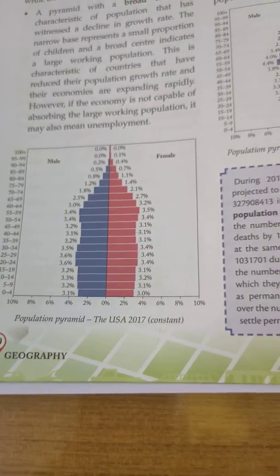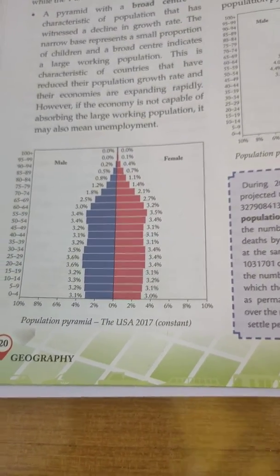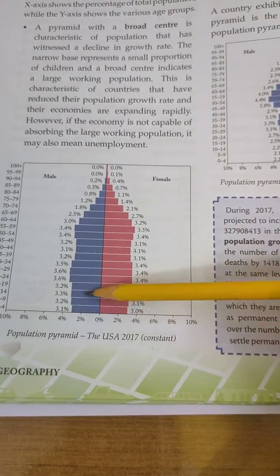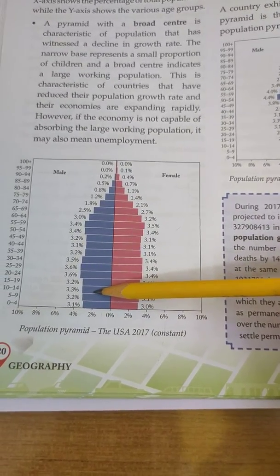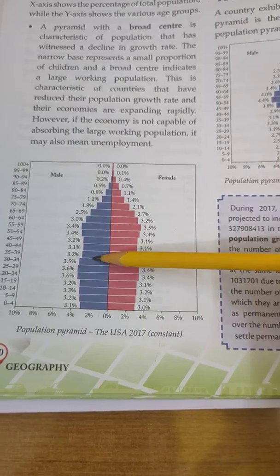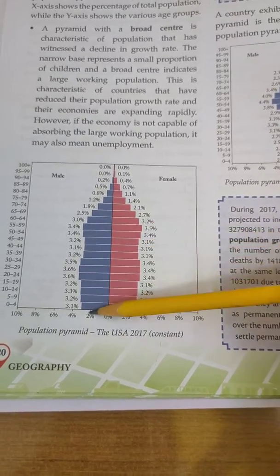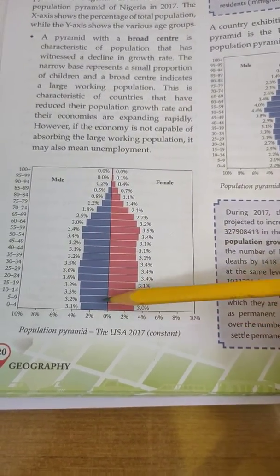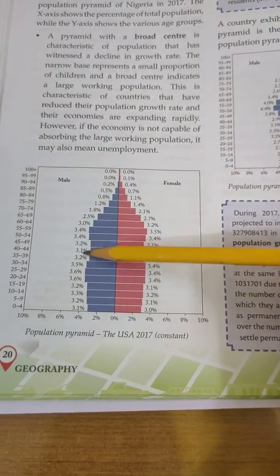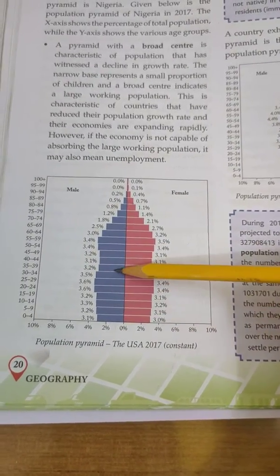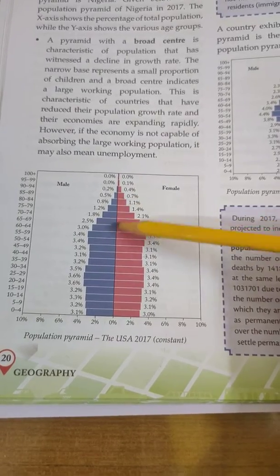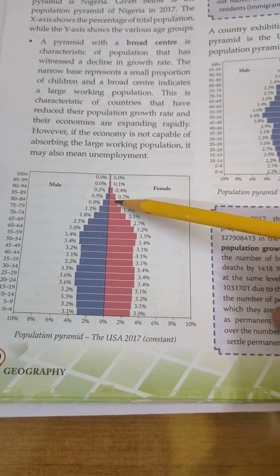The US population pyramid is almost constant because the number of people in the lower age groups and the middle age groups are almost the same. This is the census taken in 2017. When these younger cohorts grow up, the working population will also remain about the same as it is today, and the dependent population will keep becoming lesser as the years go by.